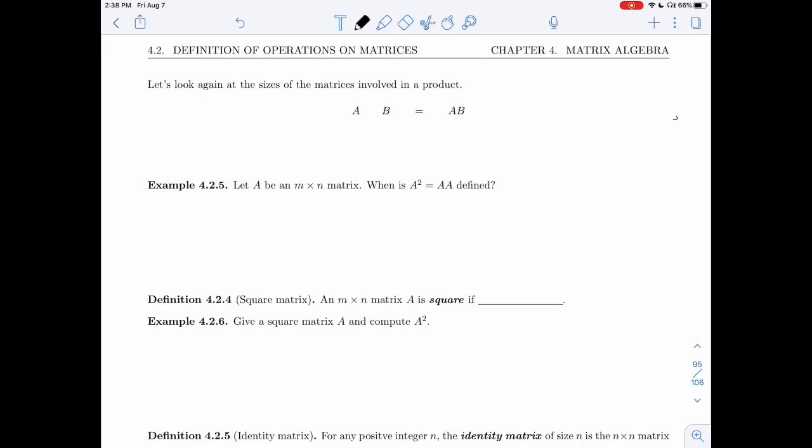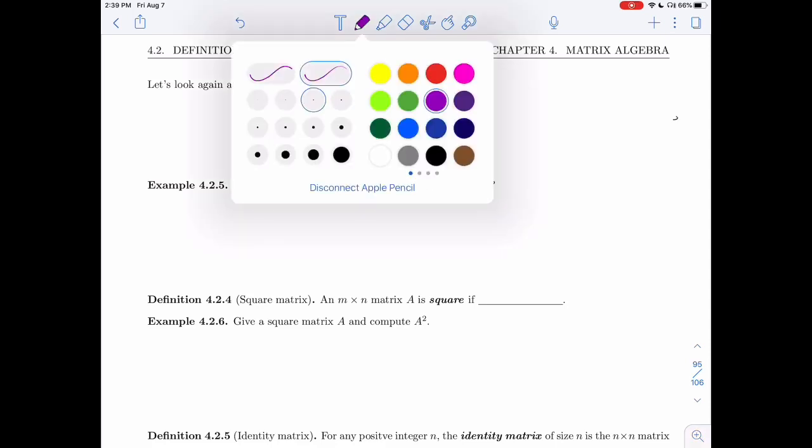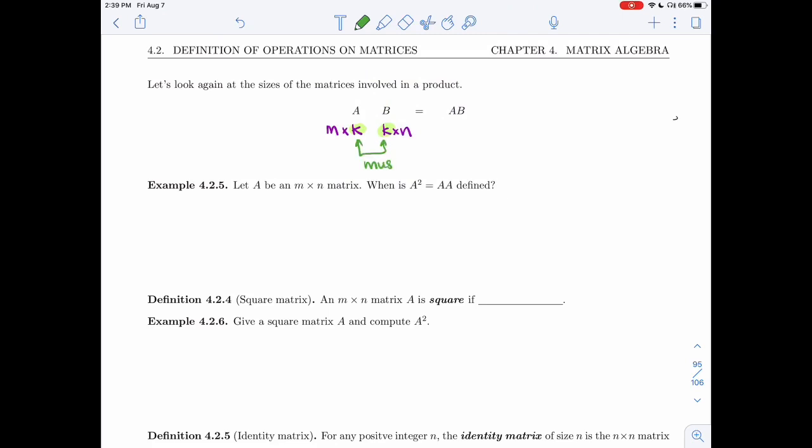Let's look again at the sizes of the matrices involved in the product. If you want to multiply A and B, let's say that M by K is the size of A, and then K by N is the size of B, then these middle dimensions must match. Otherwise, like we saw in the last example, if they're not the same size in the middle, then you won't be able to define the dot product. And then whatever is left here and here, that's the size you get. So this would be an M by N matrix.